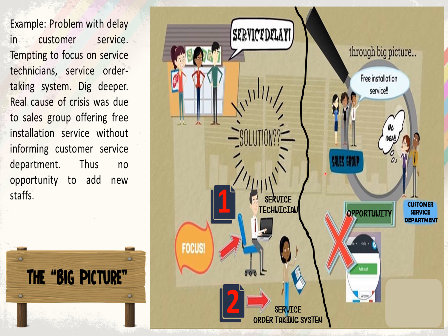The sales group was trying to boost sales by offering free installation service, so many customers bought the product. However, this information was not communicated to the customer service department, so they had no opportunity to add more staff. That's why there were delays. So when you have a problem, you cannot simply jump to a solution or conclusion — you need to look at the bigger picture to identify the root cause.